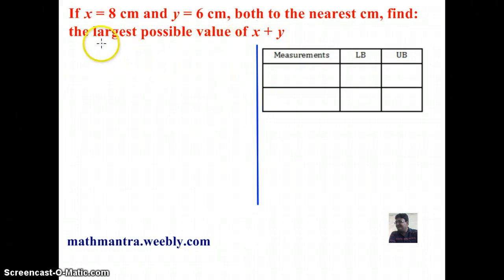In order to find the largest possible value of x plus y, we need the upper bounds of x and y. Therefore, we are not going to need the lower bounds.